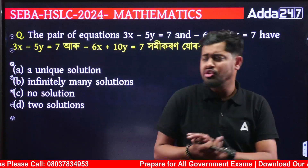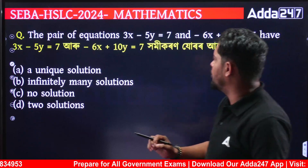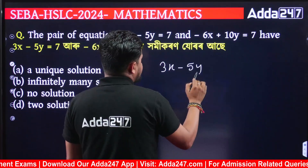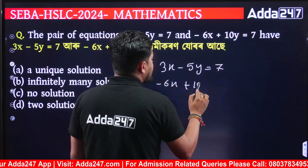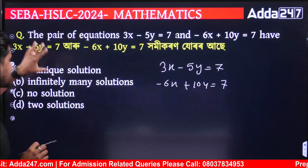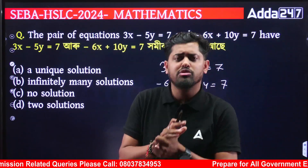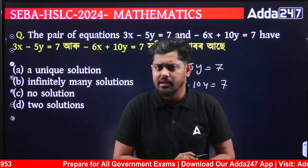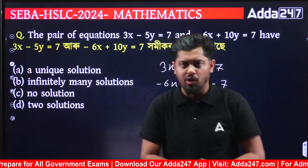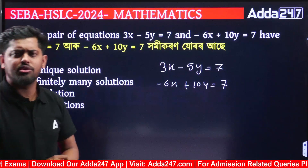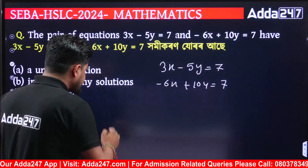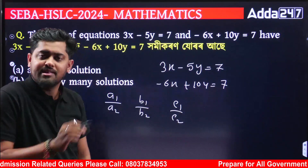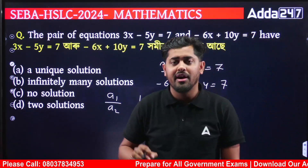Here the pair of equations: 3x minus 5y is equal to 7, and minus 6x plus 10y is equal to 7. This is a solution that you can solve. If you want to see this, this is going to give us three ratios: a1 by a2, b1 by b2, and c1 by c2.